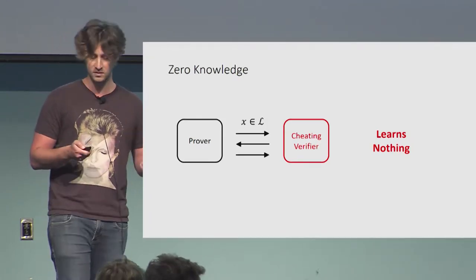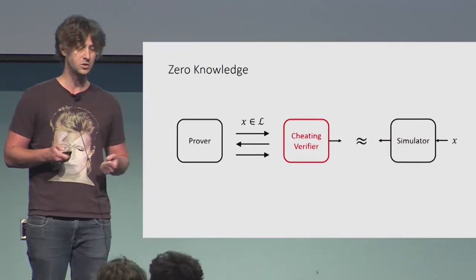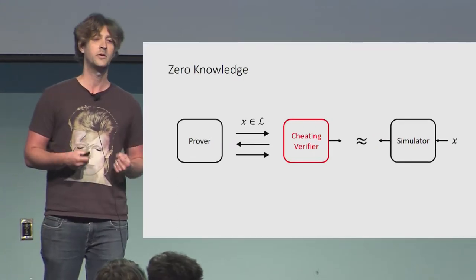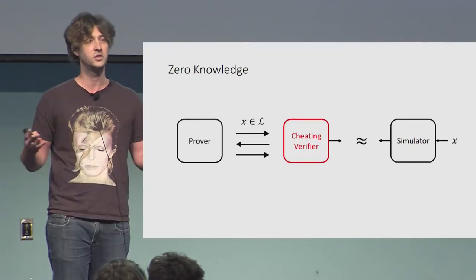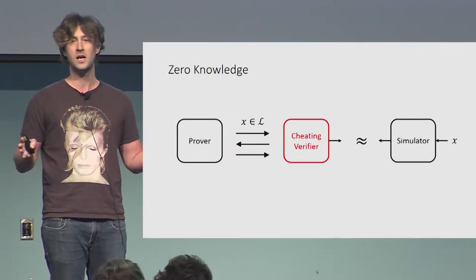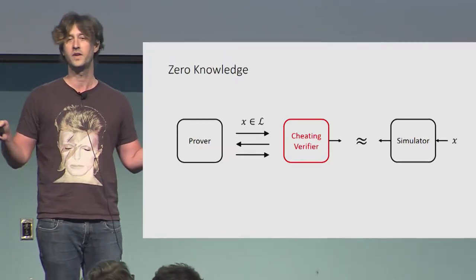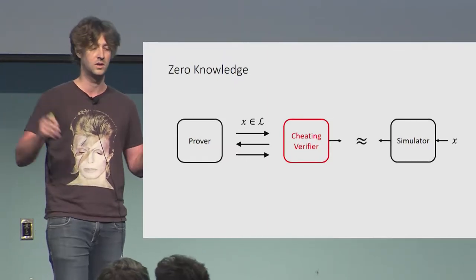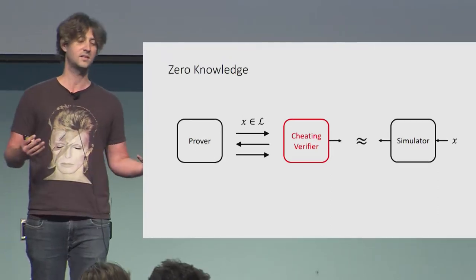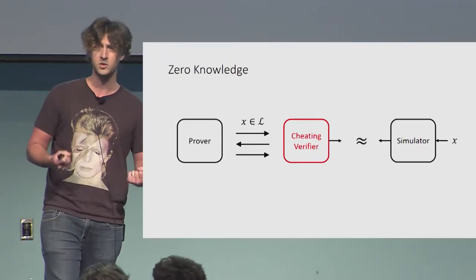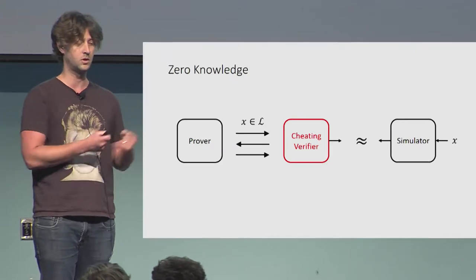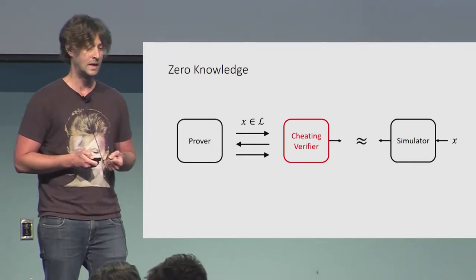And of course, we have the zero-knowledge requirement, which essentially says that the verifier should not be able to learn anything meaningful from the proof. The way that this is captured is using the simulation paradigm — requiring that there exists an efficient simulator that can simulate an interaction out of thin air, without ever speaking with the prover, such that the simulated interaction is indistinguishable from a real one.